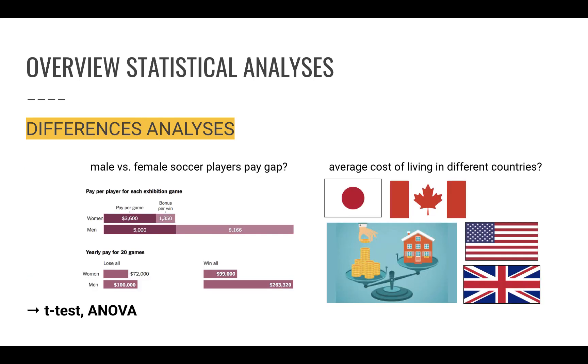Differences analysis, which is the next class, looks at differences between people in your sample. For example, is there a difference in pay between male and female soccer players? Or is the average cost of living different in different countries, such as Japan, Canada, the US, or the UK? To understand differences between people in our sample, maybe you want to know if there's differences between female and male students in terms of how much they vape or in their GPA. This is something you can find out through difference tests. Some of these are t-tests, so independent samples t-test or paired samples t-test, and ANOVA. We will keep this for next class.